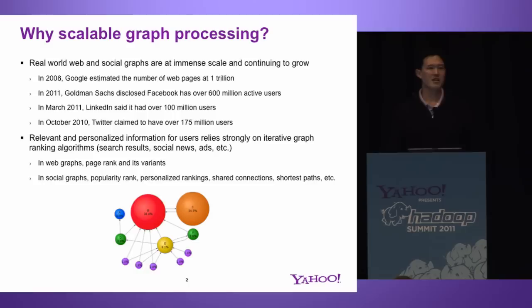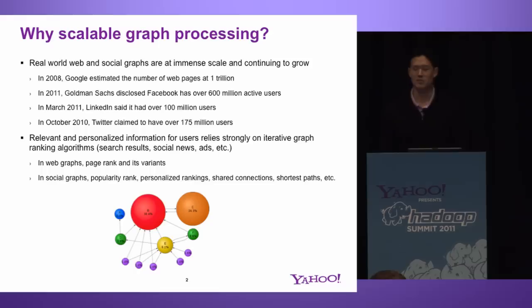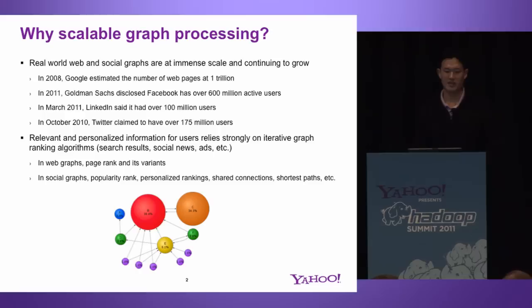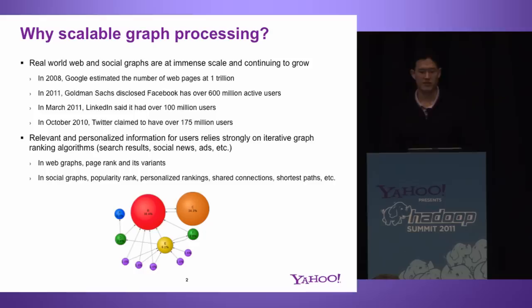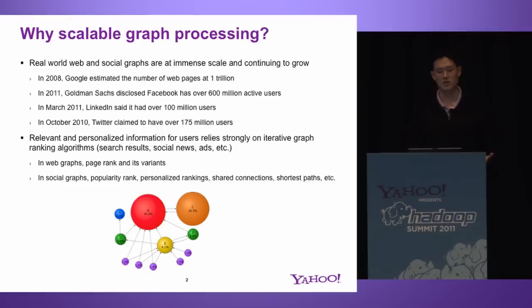Our project really focuses on scalable graph processing. The motivation is pretty clear: real-world web and social graphs have grown to a very immense scale. These numbers are fairly old and have increased significantly since then, but we know there are a ton of web pages out there, and the rise of social networks are growing into the hundreds of millions of users, maybe soon to hit a billion. With all the social and web graphs, there are a lot of great features and applications you can build around getting relevant or personalized information for users. A lot of this kind of work can be done based on graph processing.